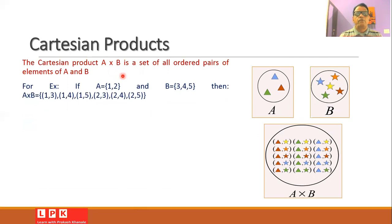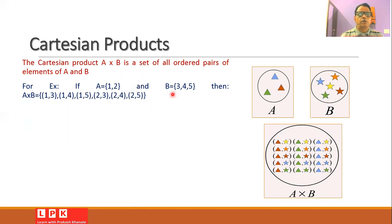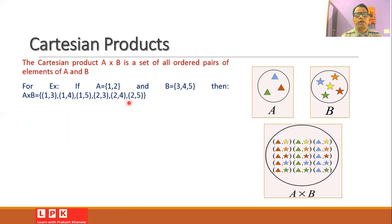For example, if A consists of two elements {1, 2} and B consists of three elements {3, 4, 5}, then A cross B is the set of ordered pairs: (1,3), (1,4), (1,5), (2,3), (2,4), and (2,5).